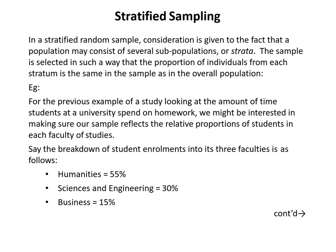The next type of random sampling is called stratified sampling. In a stratified random sample, we're particularly interested in how the overall population breaks down into subgroups — we call these strata. We select our sample in such a way that whatever the proportion of individuals in the population is across the different strata, we reproduce that same proportion across the different strata in our sample.